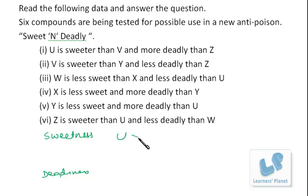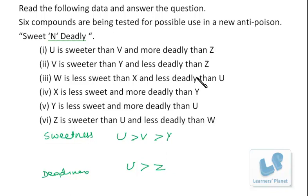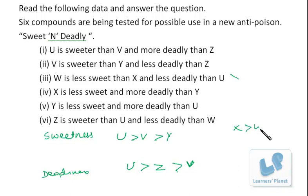U is sweeter than V and more deadly than Z — so U is deadlier than Z. V is sweeter than Y. V is less deadly than Z, so V goes here in the deadliness sequence. W is less sweet than X — meaning X is sweeter than W. W is less deadly than U, meaning U is deadlier than W.